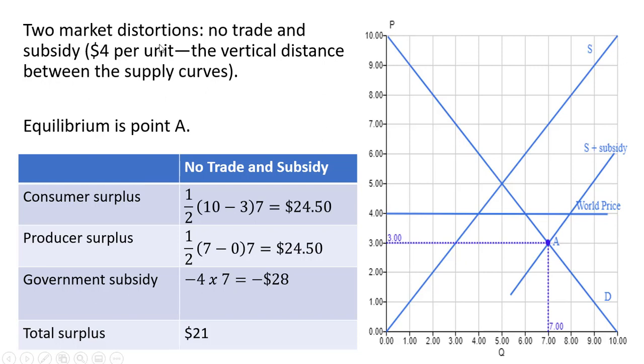So we're going to start with two market distortions: no trade and the subsidy. In our example, the subsidy is going to be $4 per unit, which is just a vertical distance between the two supply curves over here on the diagram on the right. So here's the supply curve without a subsidy. With a $4 subsidy, it's going to shift down the supply curve vertically by $4.